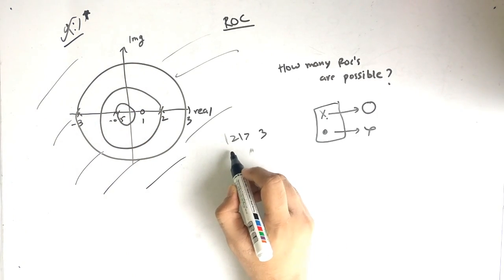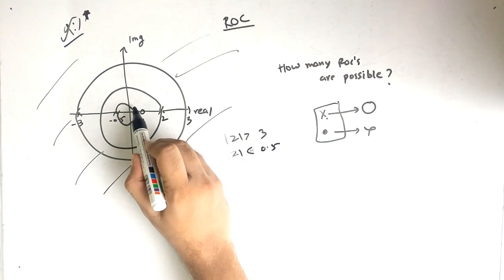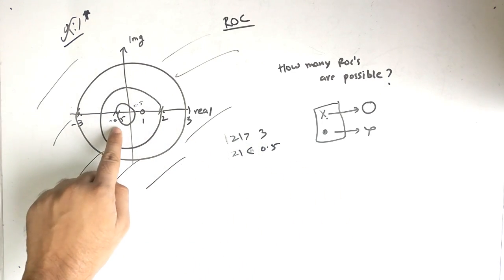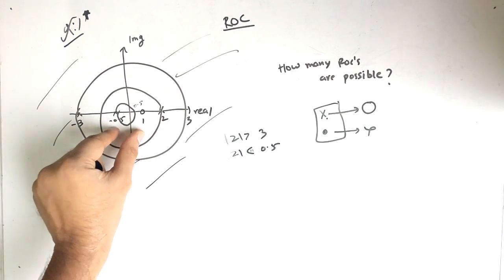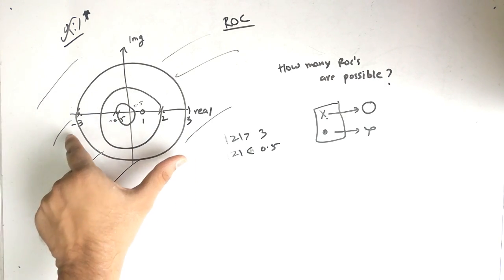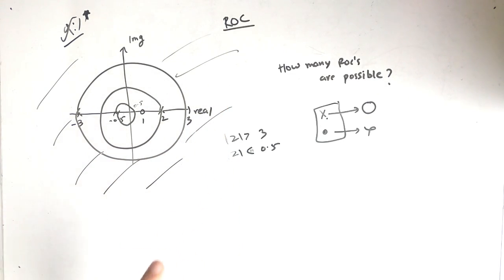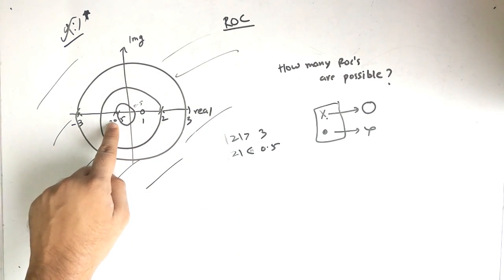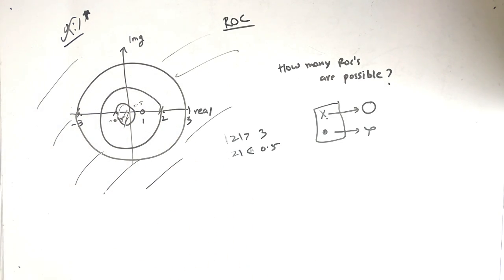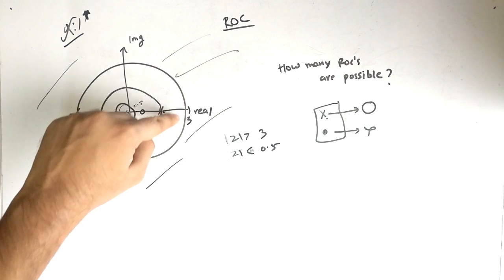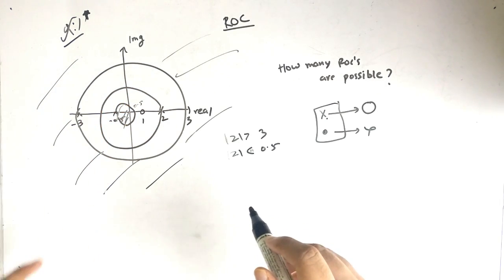The second possible region is |z| < 0.5, since we have poles at ±0.5 — that circle gives this inner region. So the first region is |z| > 3 and the second region is |z| < 0.5. There are also two intermediate areas possible — let's take them one by one.